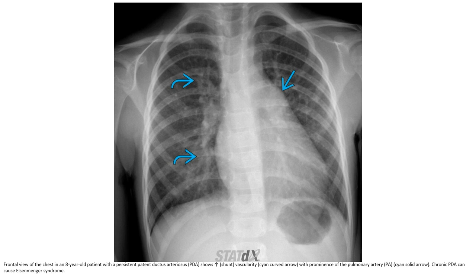Frontal view of the chest in an eight-year-old patient with patent ductus arteriosus showing increased vascularity with prominence of the pulmonary artery. Chronic PDA can cause Eisenmenger syndrome.